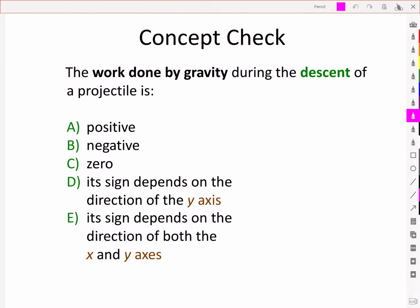So if we think about the work done by gravity, let's think first about the force of gravity. We know that the force of gravity is acting downward, and the displacement is downward during a descent. And we know that the speed is increasing. This suggests that the work done by gravity is positive, because the speed is increasing.